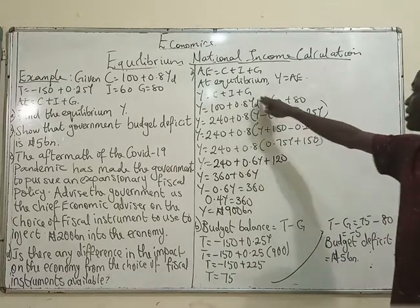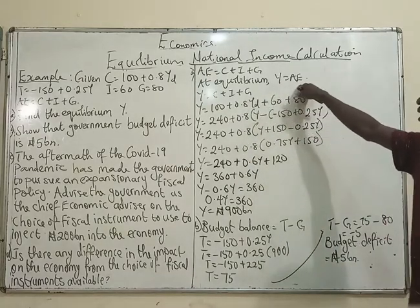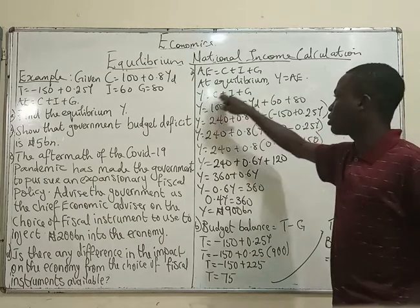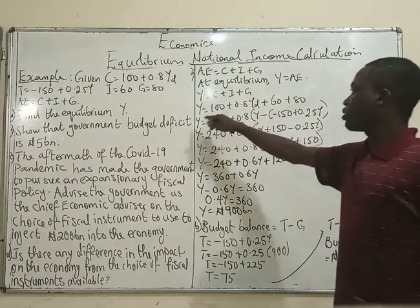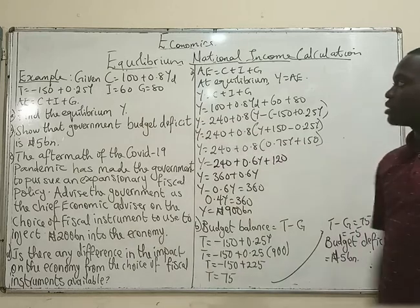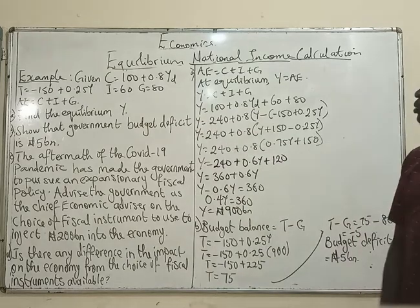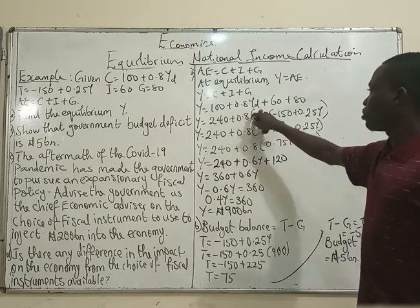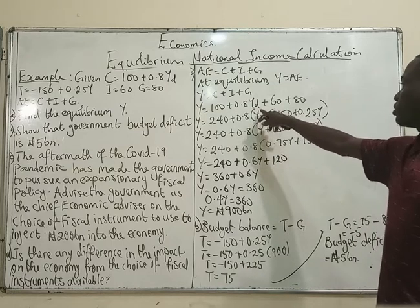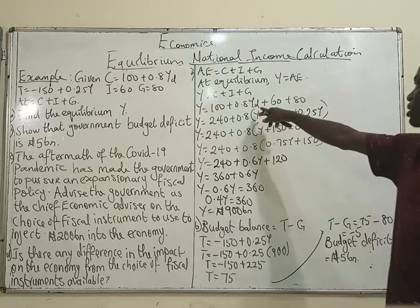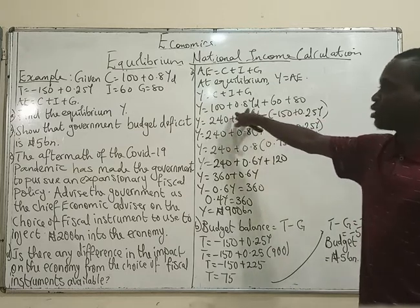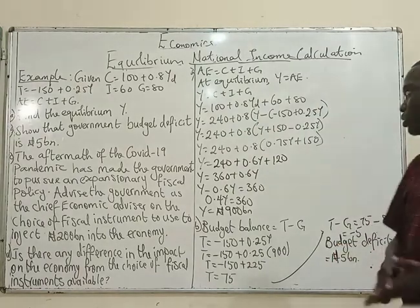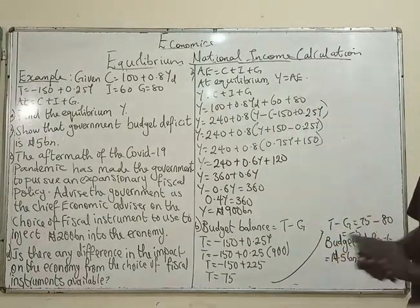Y equals C plus I plus G. Since Y equals AE, we are at equilibrium. So Y equals C plus I plus G. C is 100 plus 0.8 YD — where YD is disposable national income, not an individual's consumption but aggregate consumption.